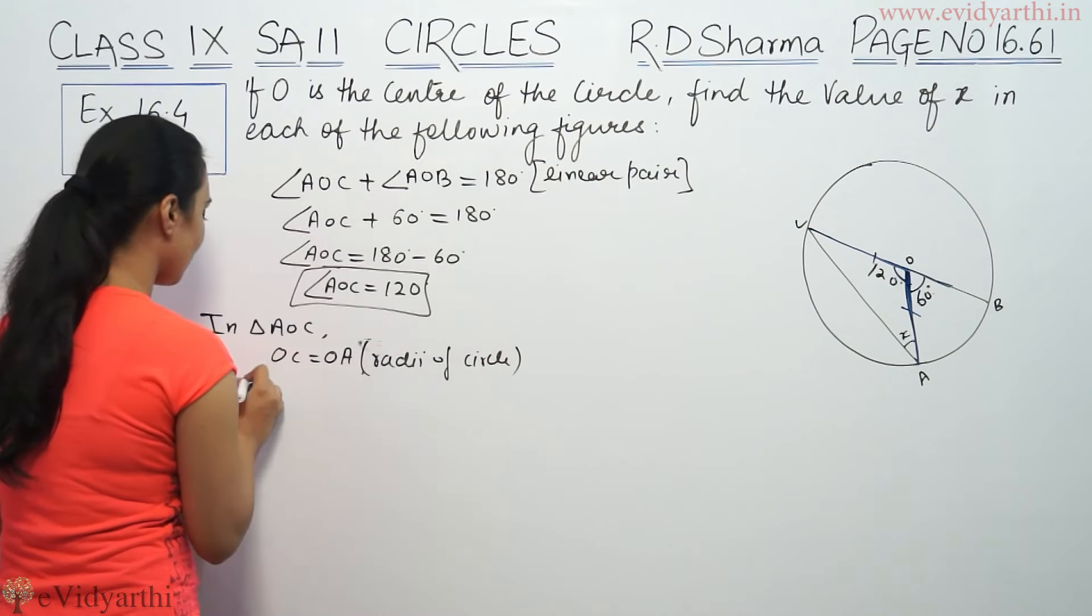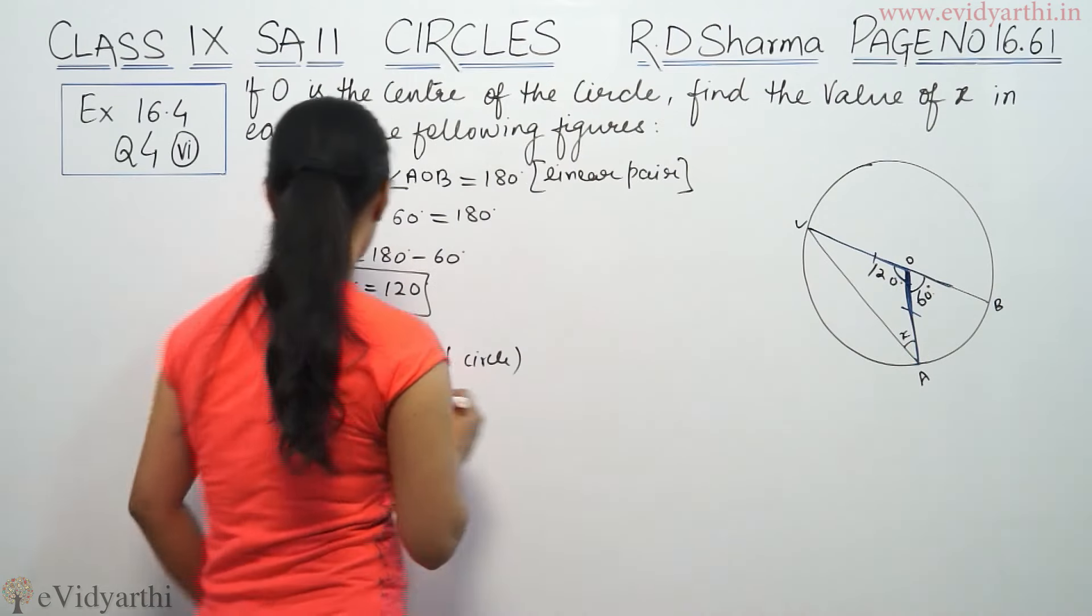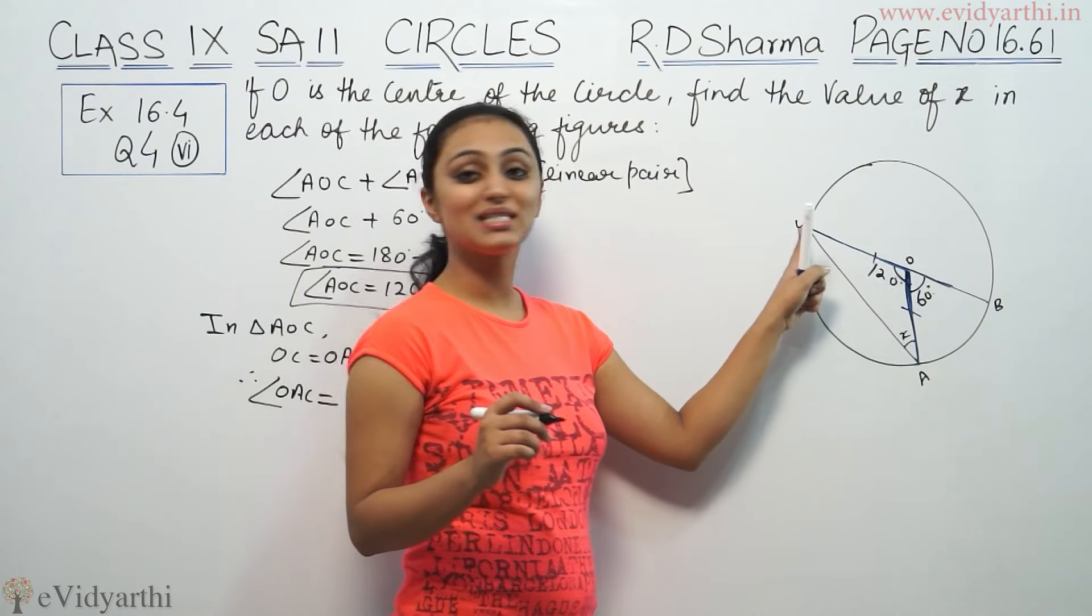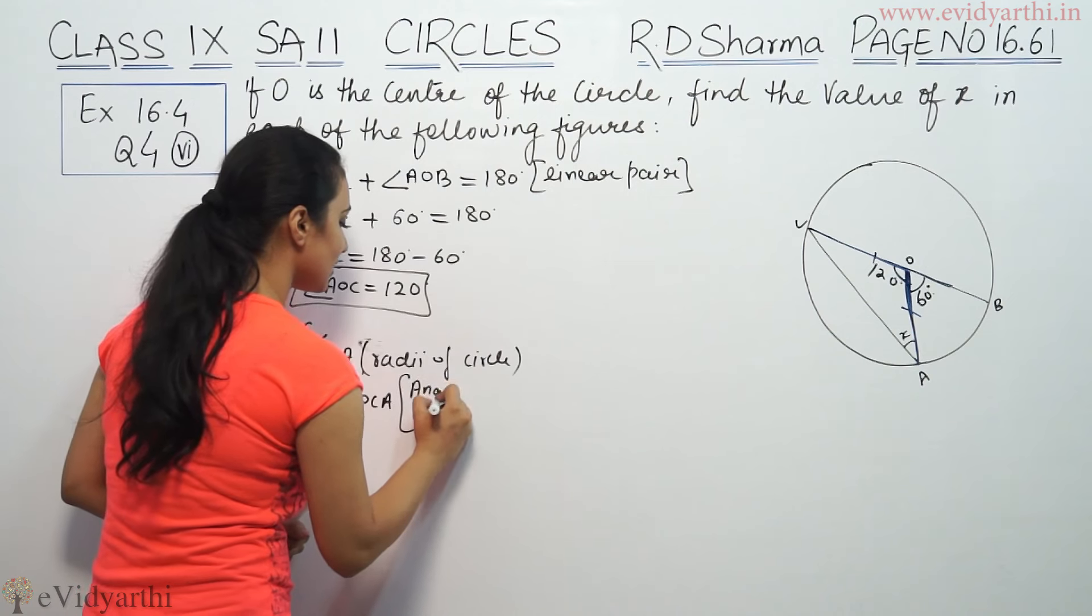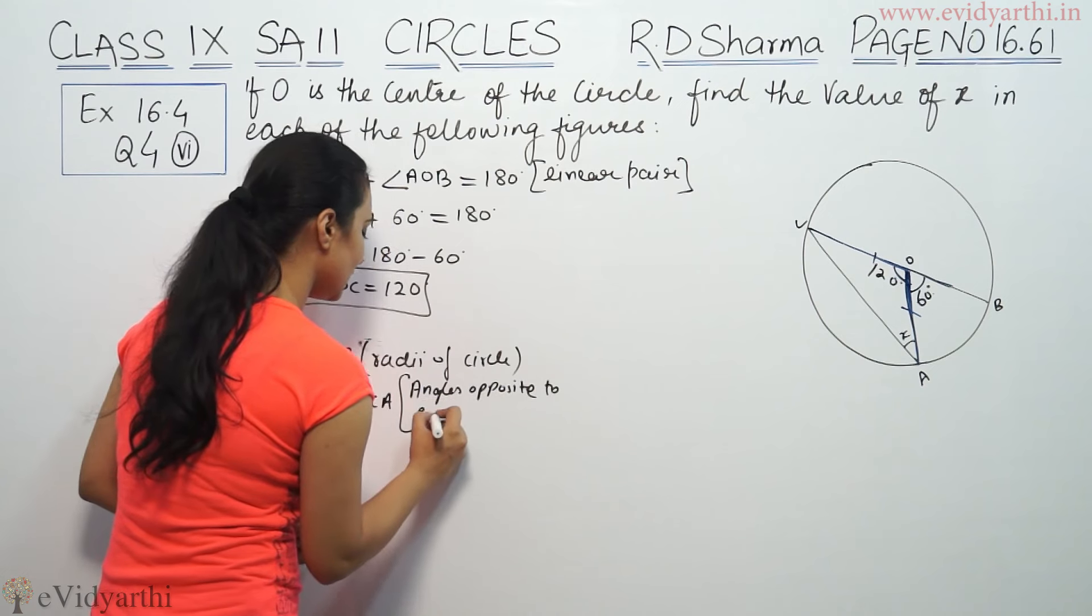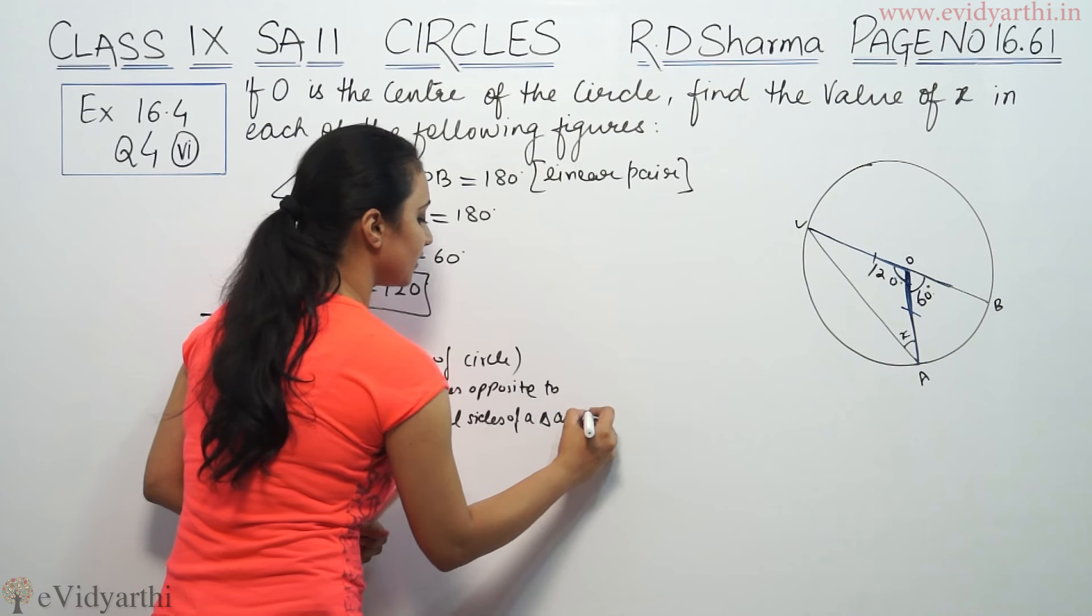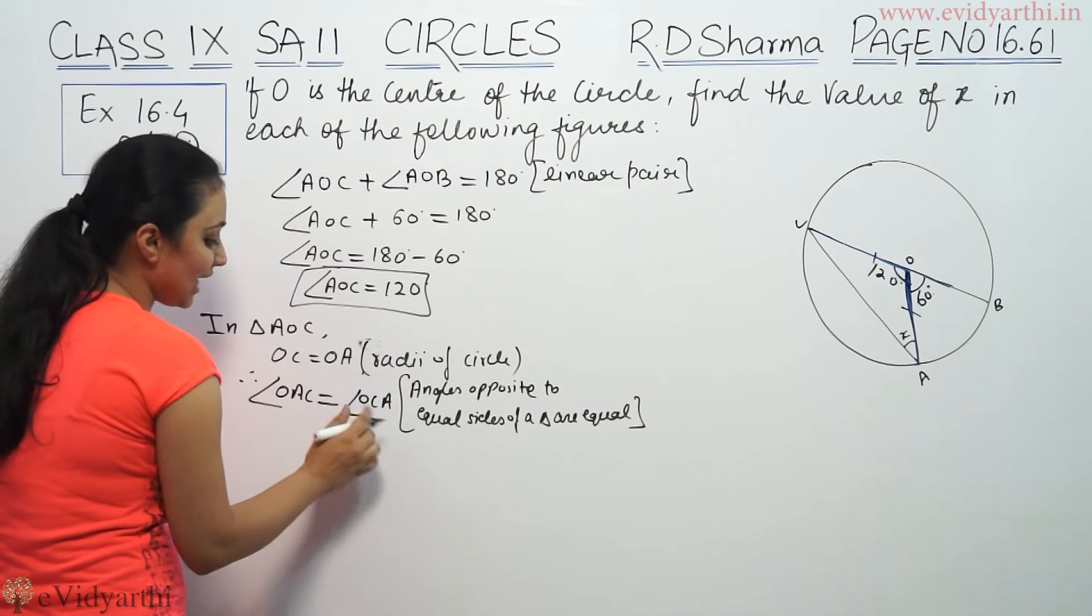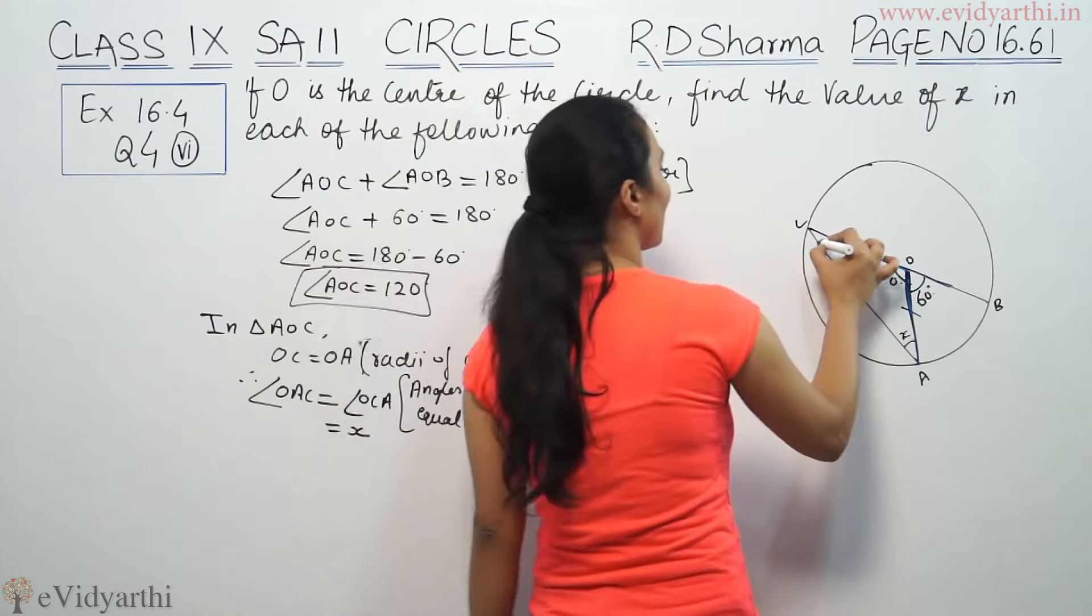This angle OAC and this angle OCA - we will write angles opposite to equal sides of a triangle are equal. So angles opposite to equal sides, this will be equal to X. So this angle is equal to X.